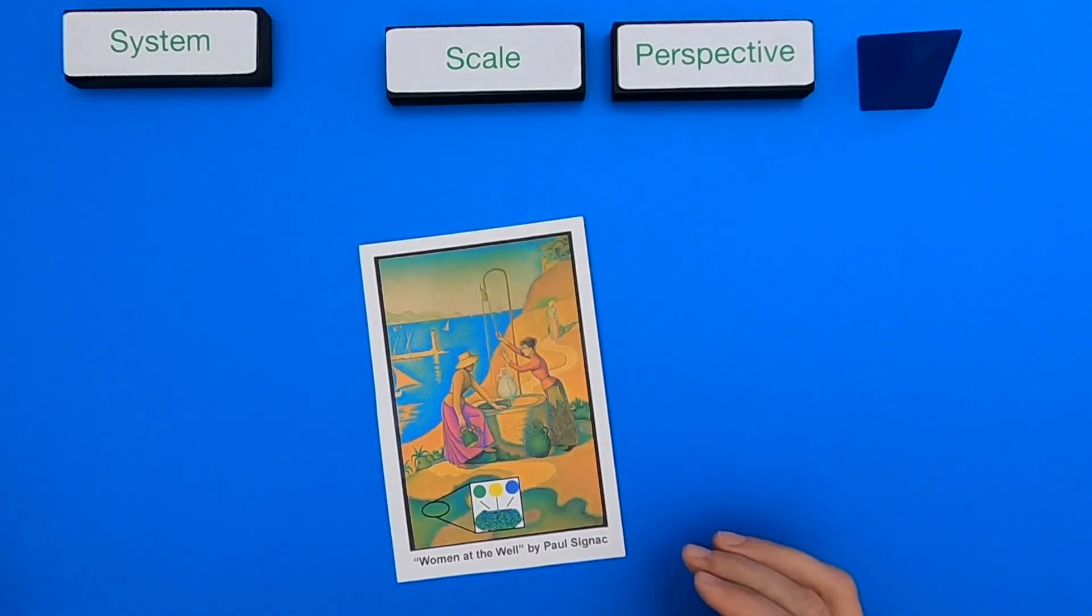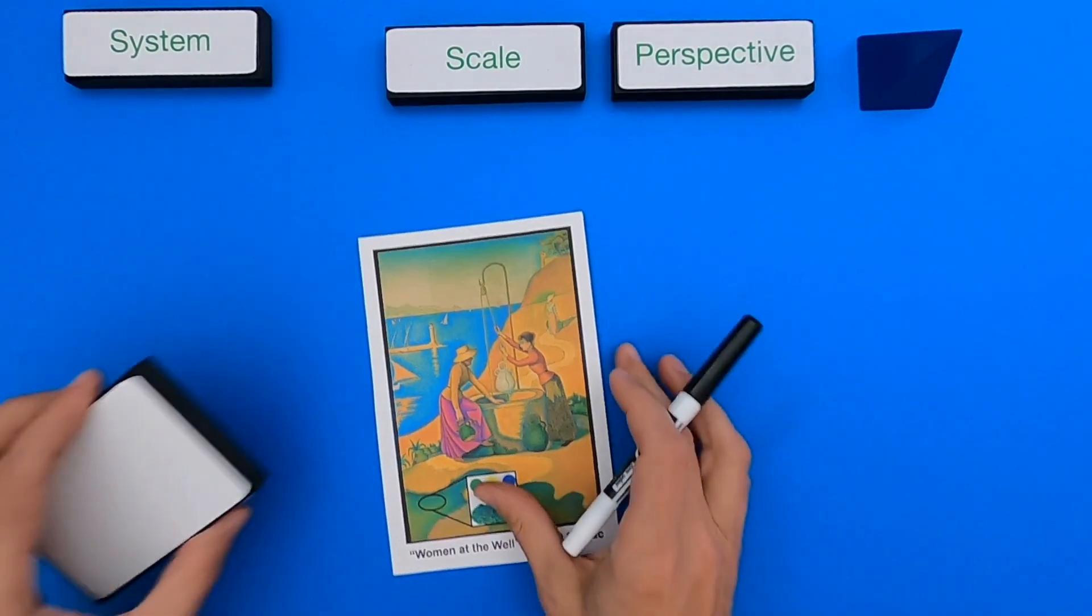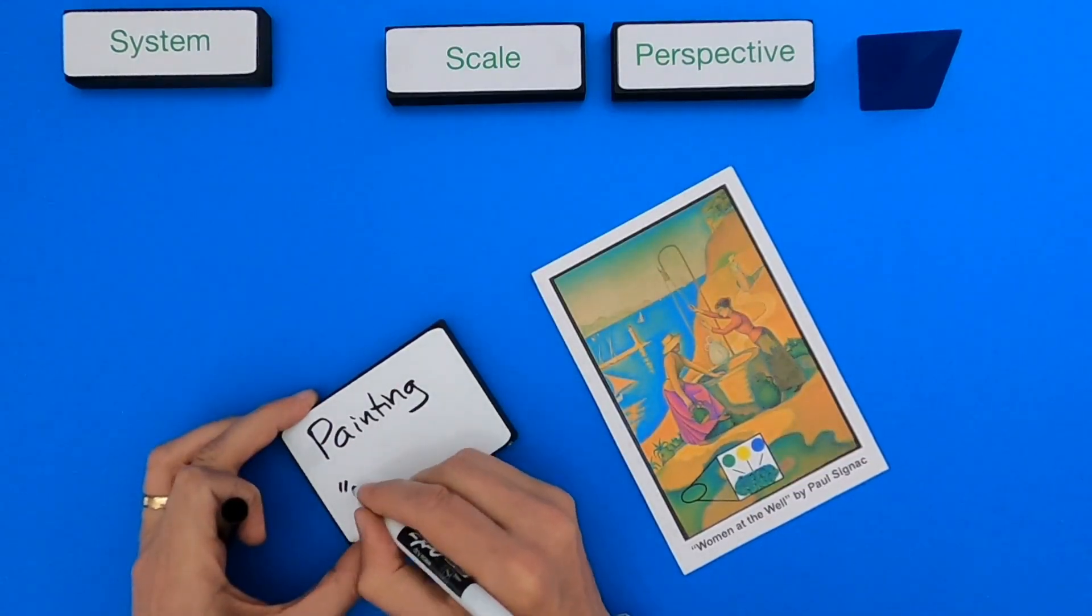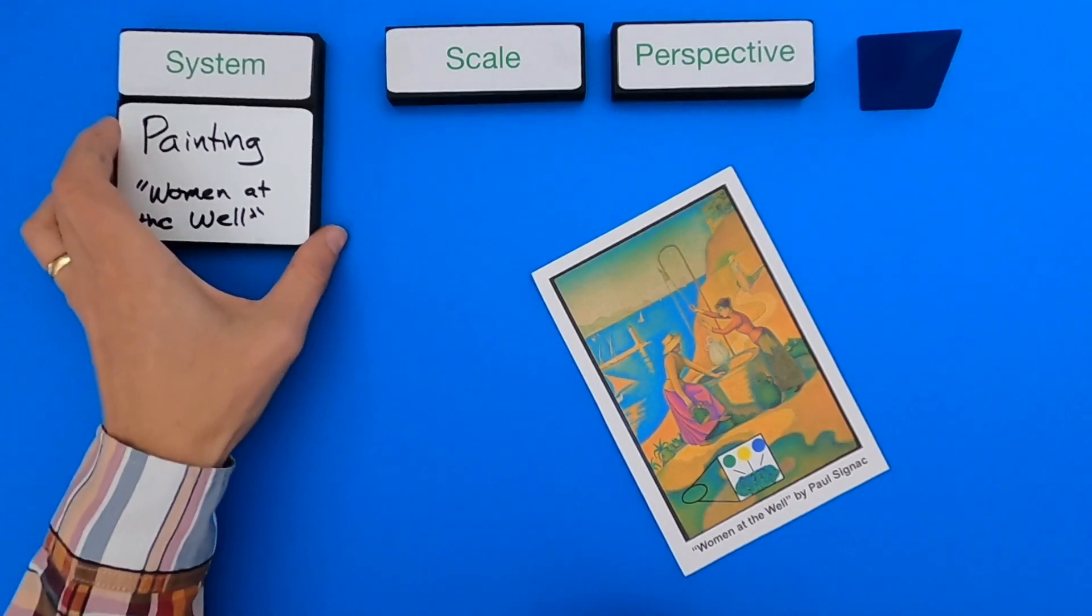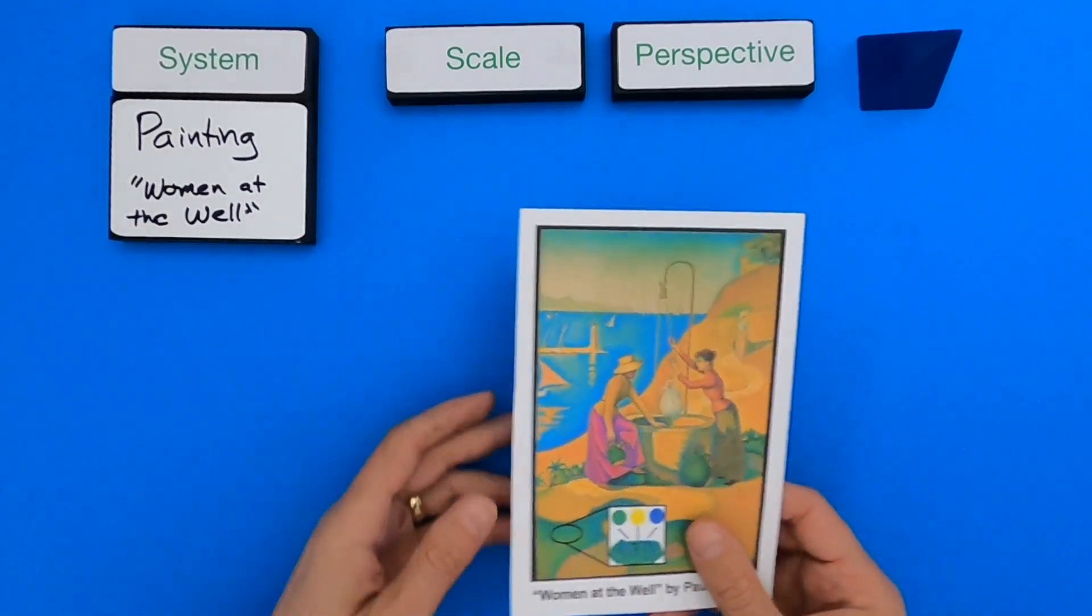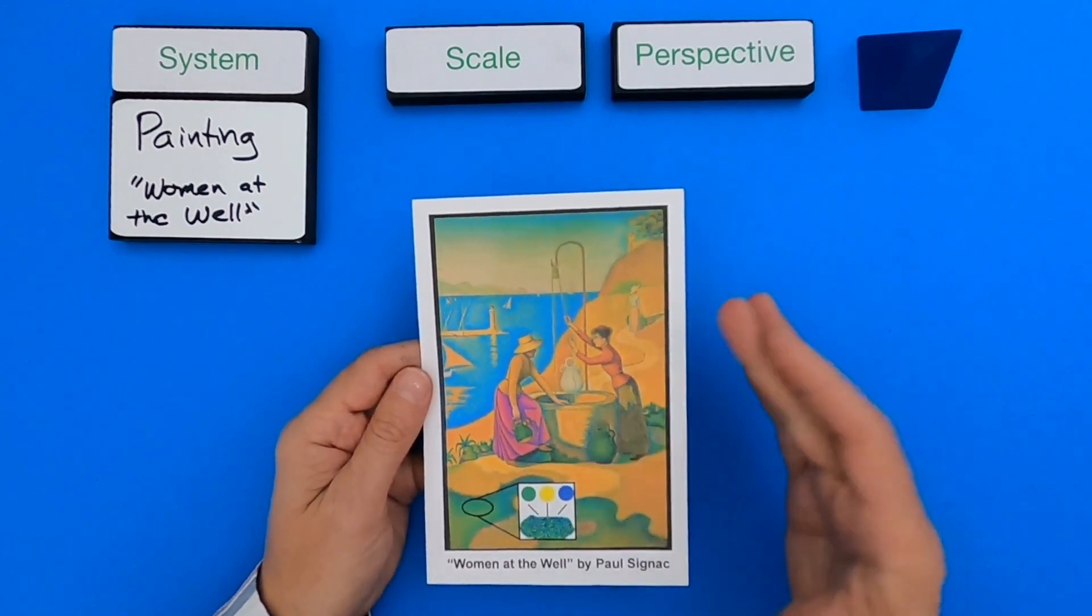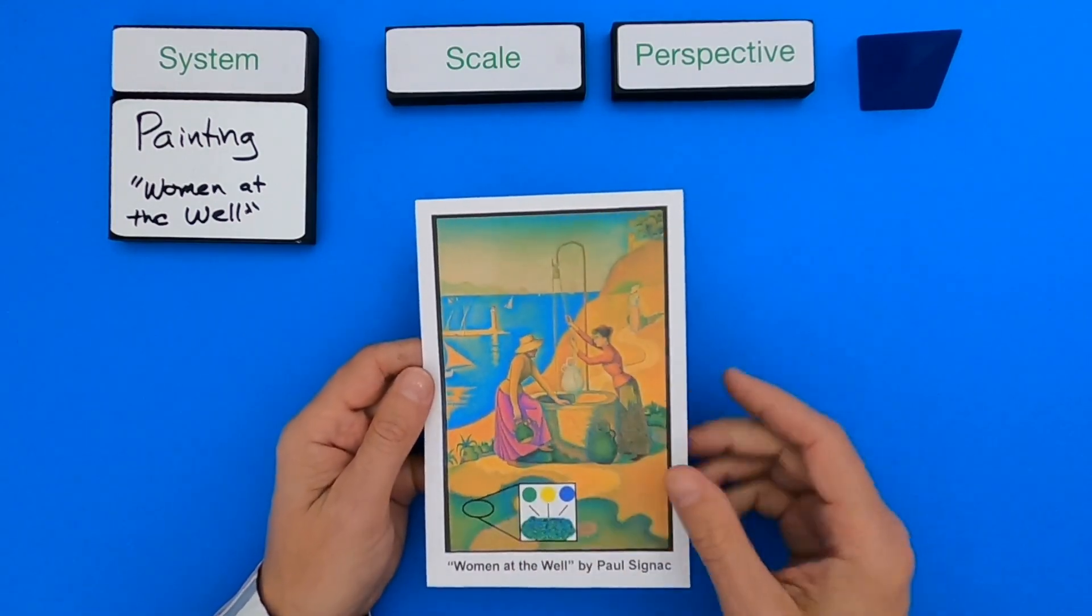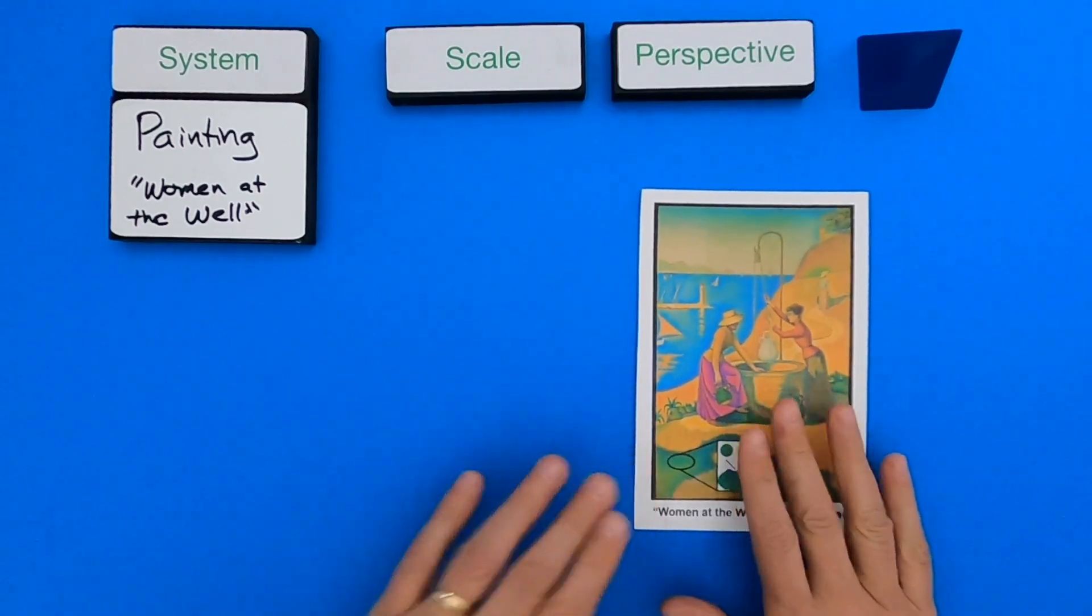Okay, so the first thing we should always do is write up the system. What system are we investigating? So the system that we're going to investigate is going to be this painting. Obviously the LifeSide painting is much larger than this, but we just have a copy of it. So let's set that up as our specific scale.